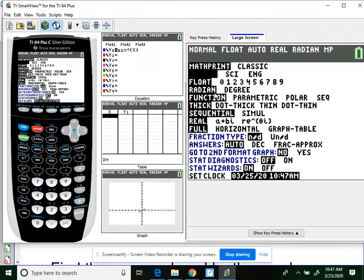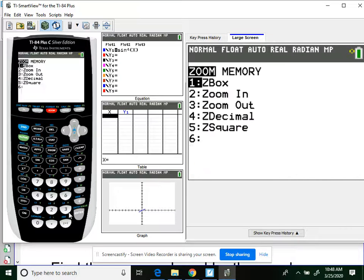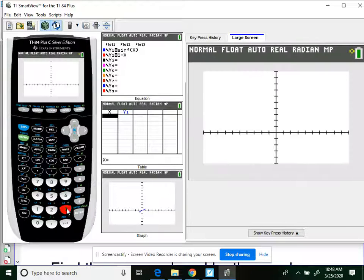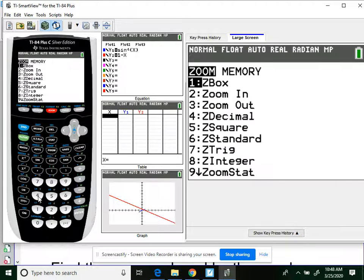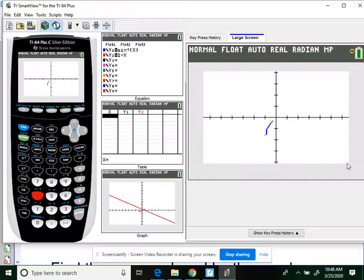So y1 is arcsin, y2 is 1 minus x. Always check that you're in radians, especially those in physics because you have to go back and forth. I'm going to hit, usually I don't just hit graph, I usually hit zoom 6 or zoom 3. I'm going to try zoom 3 right now. Nope, it's not zoom 3, it's supposed to be zoom 4.